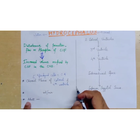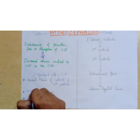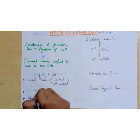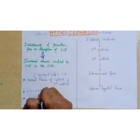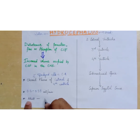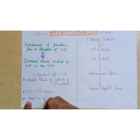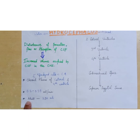The normal rate of formation of cerebrospinal fluid is 0.2 to 0.35 milliliters per minute. The normal circulating volume of CSF is 120 milliliters in a normal adult.